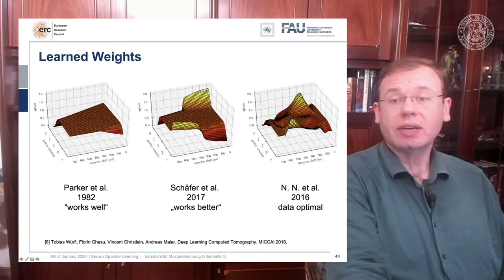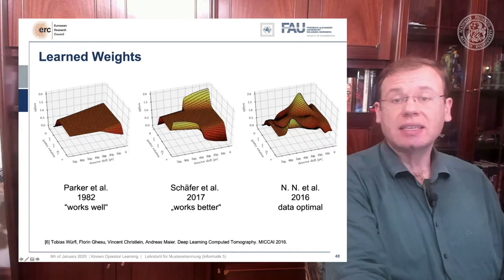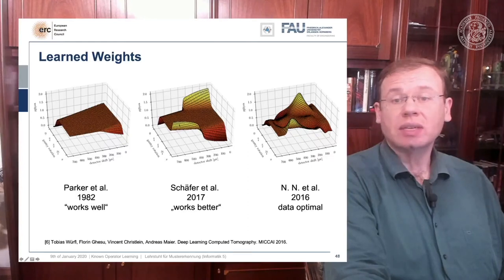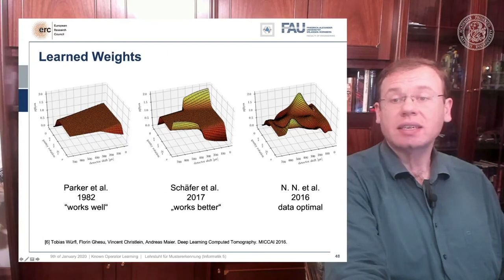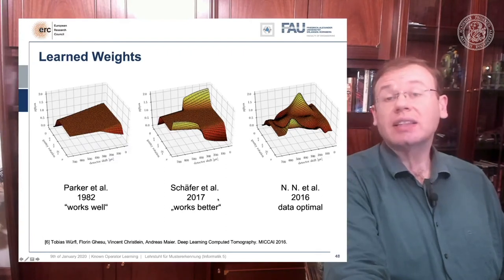You can see a distinct difference on the very left and the very right. If you look here and if you look here you can see that in these ways this goes all the way up here and here. And this is actually the end of the detector. So here and here is the boundary of the detector.